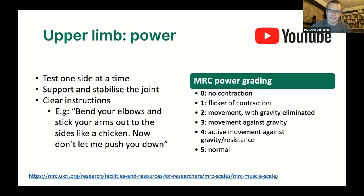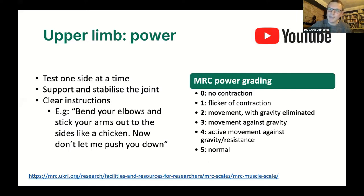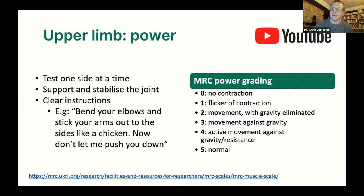You can grade power using the MRC power grading scale, developed during World War Two to standardize muscle power grading. You can read the grading system yourself, but the problem is it's quite subjective — the majority of patients will be grade four or five, and there's a big difference between them. It does depend on your own strength as well. Despite being subjective, it's the best system we have for standardizing how we describe limb power.